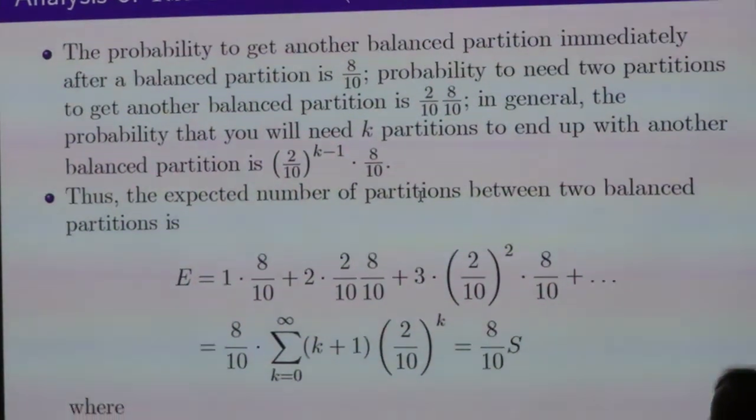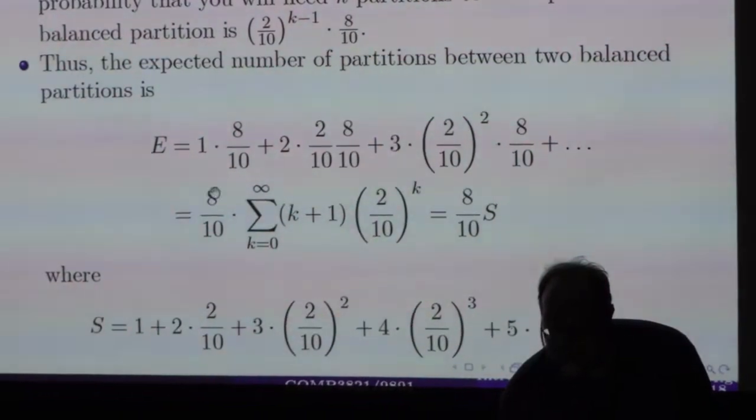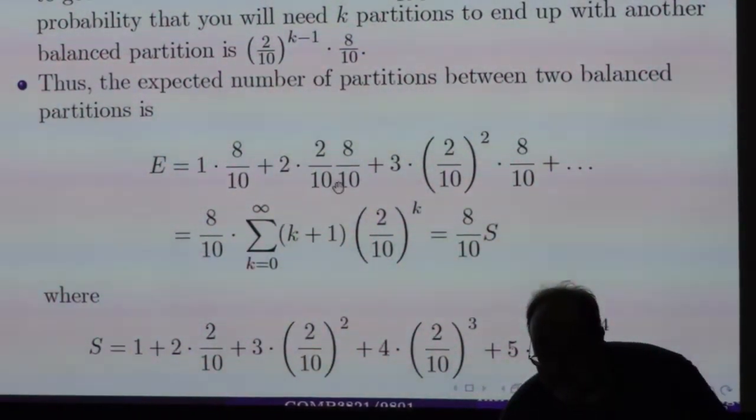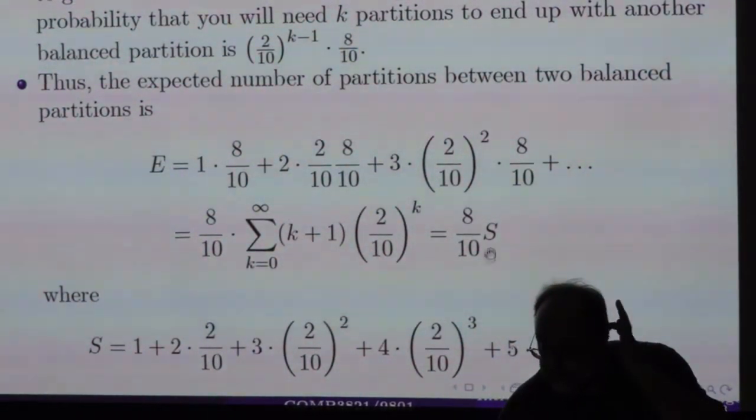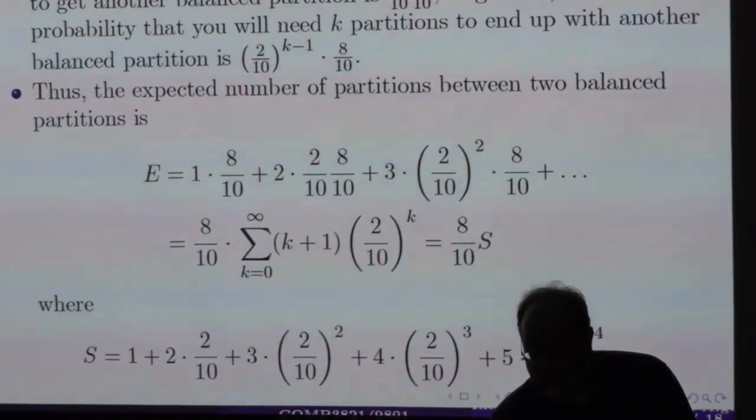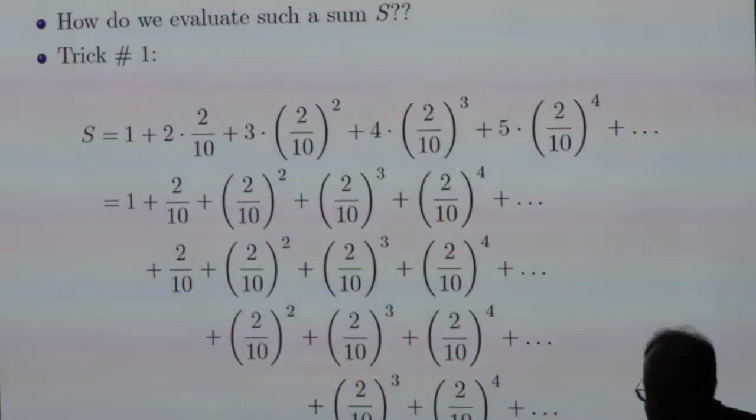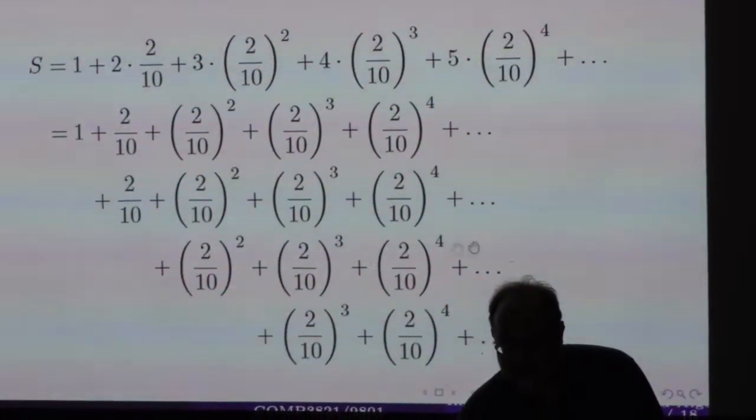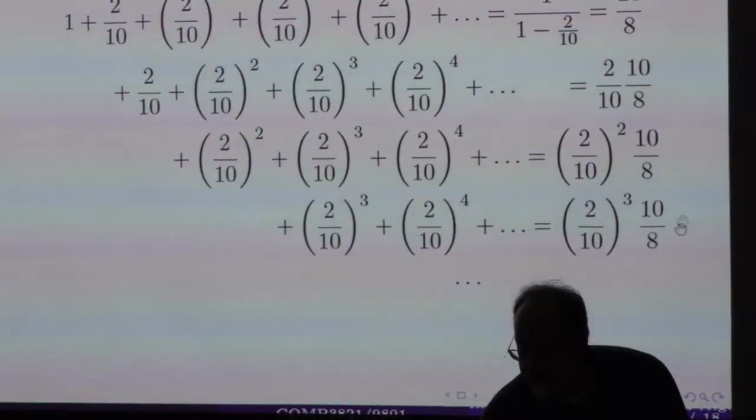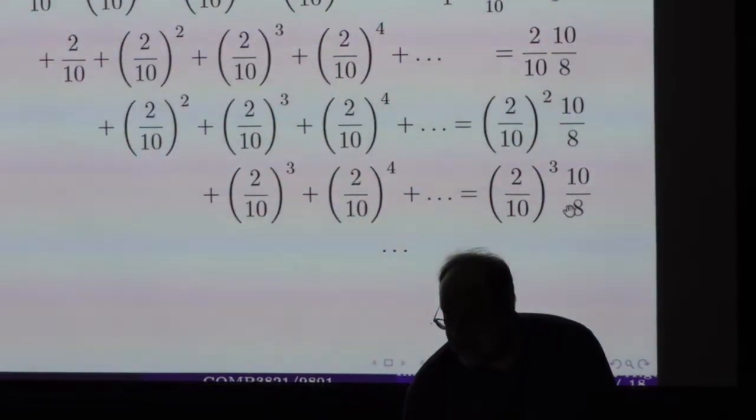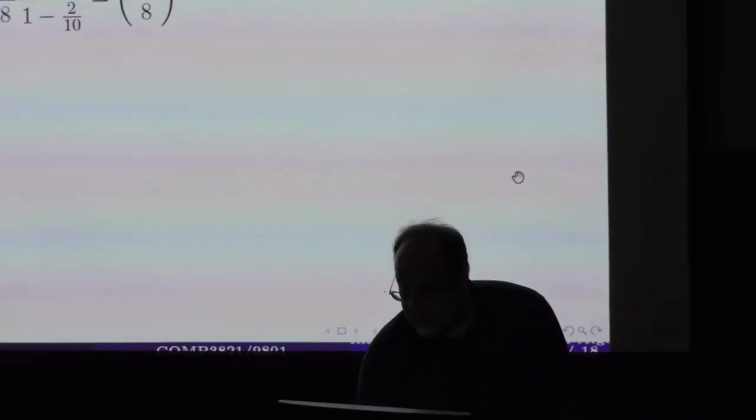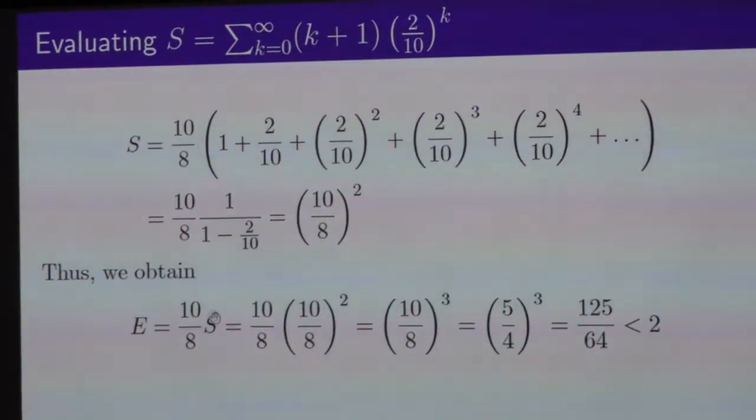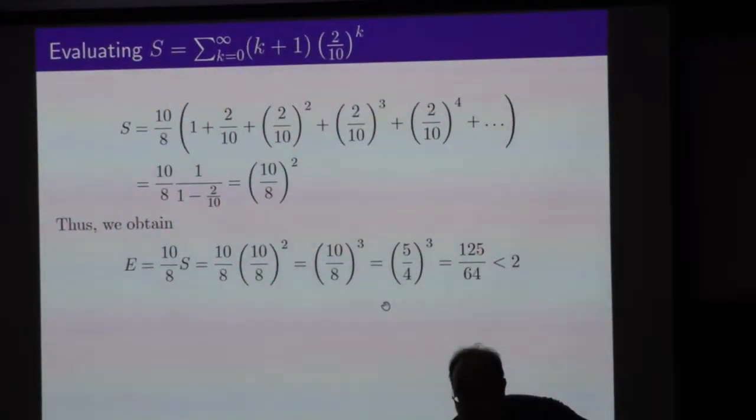So we then expect the number of partitions between two balanced partitions will be given by this formula. One partition with one splitting with probability 8 over 10, two splittings with this probability and so forth. And this is 8 over 10 times this sum. And then I showed you last time a couple of ways to evaluate this sum. Here is the simplest way. You represent this as this triangular double sum. Each of the layers is a geometric progression that you can easily sum. And then fortunately the results are also yet another geometric progression which you can also sum. And you get 10 over 8 squared. So then the expected number, you remember s is just the sum, but we have to multiply it with 10 over 8. And lo and behold, we get...